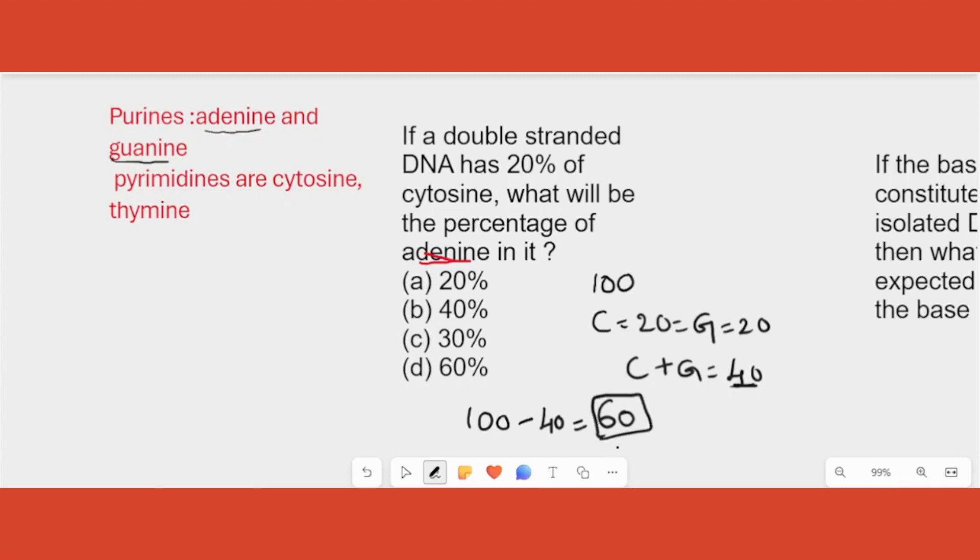100 minus the total number 40 is equal to 60. Now 60 base pairs that are there, obviously it has to be A and T only. There is no other base pair. There are no other nitrogen bases in the DNA. So A and T together is 60. Because A is equal to T, now A plus T is equal to 60. So what will be A? A will be half of 60 that is 30.